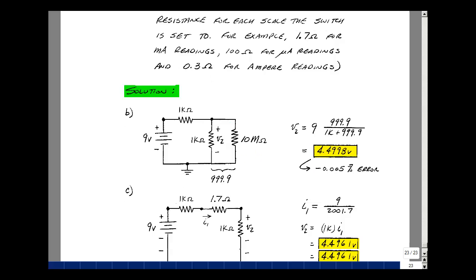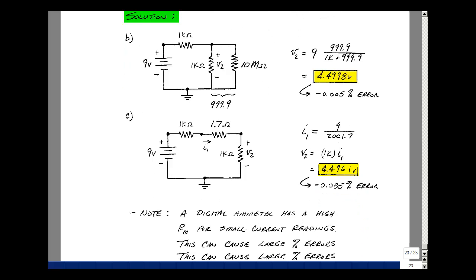Let's take a look at the ammeter reading. Now this time I've got a 1.7 ohm resistance, and so my total current now is going to be 9 volts divided by 1K plus 1K plus the 1.7, which is 2001.7. If I multiply that by the 1K that's here, I get a voltage of 4.4961. That again is a small error, but it's a little bit bigger than last time because this was 0.33 ohms.